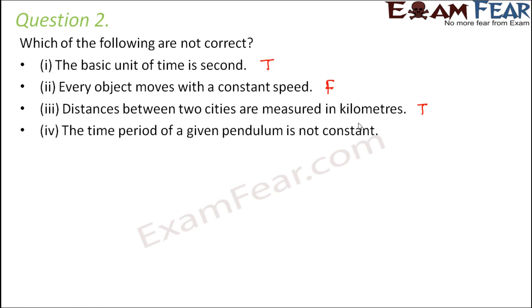The time period of a given pendulum is not constant. What is time period? It is the time taken to complete one oscillation. So let's say this is the pendulum. This is the mean position. It moves to the extreme position, comes back, passes through the mean position, goes to the other extreme position and comes back. So this is one oscillation. And the time taken to complete this one oscillation is called time period. And for any pendulum, the time period will remain constant. The time period will not change. The time period is only dependent on the length of the pendulum. So when you are talking about a given pendulum, the length always remains the same because it is the same pendulum we are talking about. And therefore, the time period also remains constant. So this statement is false.